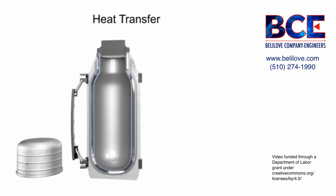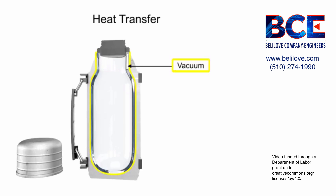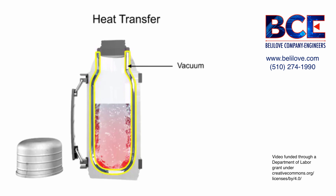In between the silvered glass walls of a thermos lies a vacuum. In the case of a hot liquid, heat transfer by convection through the vacuum is greatly restricted due to the absence of air molecules necessary to facilitate the transfer of heat. The lack of physical contact between the inside and outside walls of the thermos due to this airless space also greatly inhibits the movement of heat by conduction.